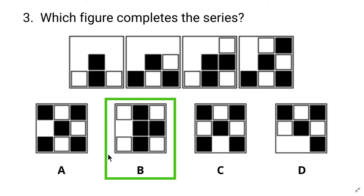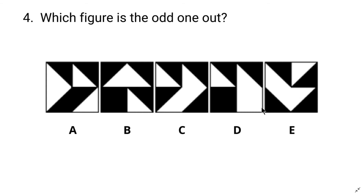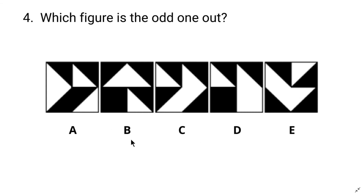Alright, the next problem: which figure is the odd one out? There are five figures A, B, C, D, and E. When solving odd-one-out problems, you have to look at the whole image at once. Here we can see lots of triangle shapes. In the first image, there is a white triangle here and here, and another two combined white triangles, making four white triangles total. In the next images we can see three, then four, then four, and four again in the last image. Only B has three white triangles, which makes it the odd one. So the answer is B.